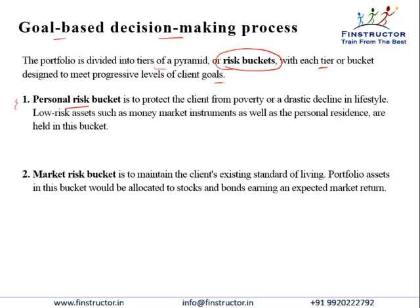We are tiering the investor's portfolio. The first tier or first bucket is called the personal risk bucket. This bucket is to protect the client from poverty — not to maintain his lifestyle, but just to make sure survival. This is the minimum assets needed without which the client won't be able to meet basic essential human needs. At least this much money should be kept in low-risk assets like money market instruments. The personal residence is also a part of this bucket. These assets are needed for minimum sustenance of life or to protect the client from poverty.